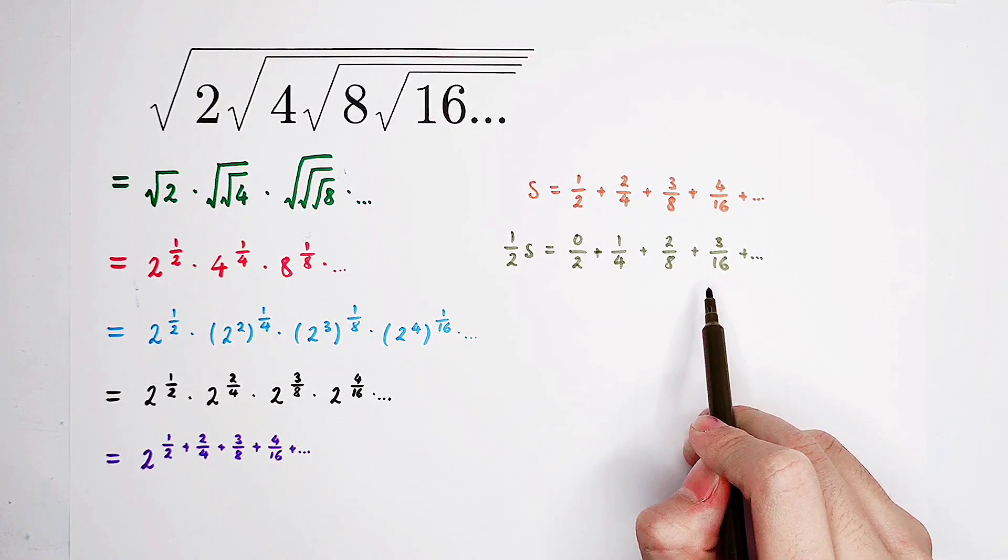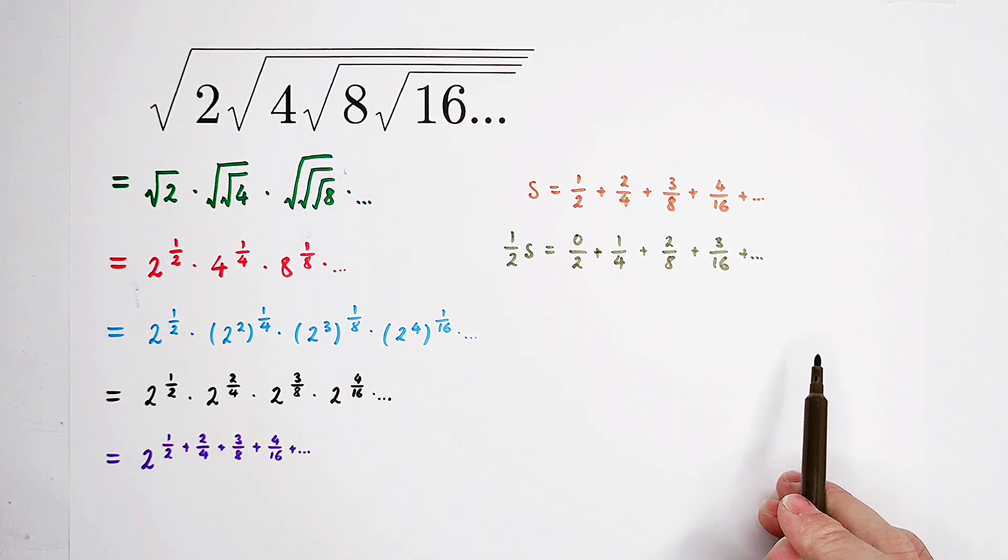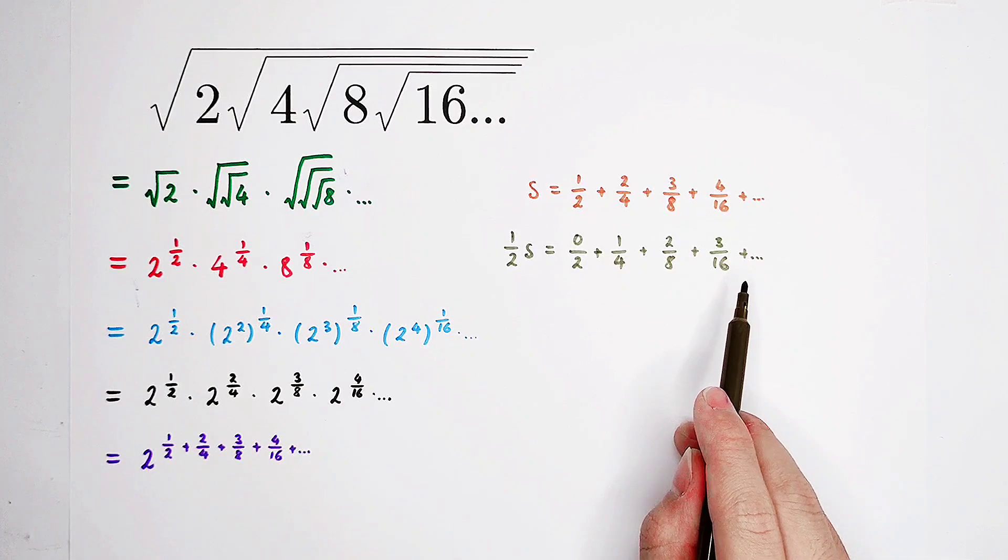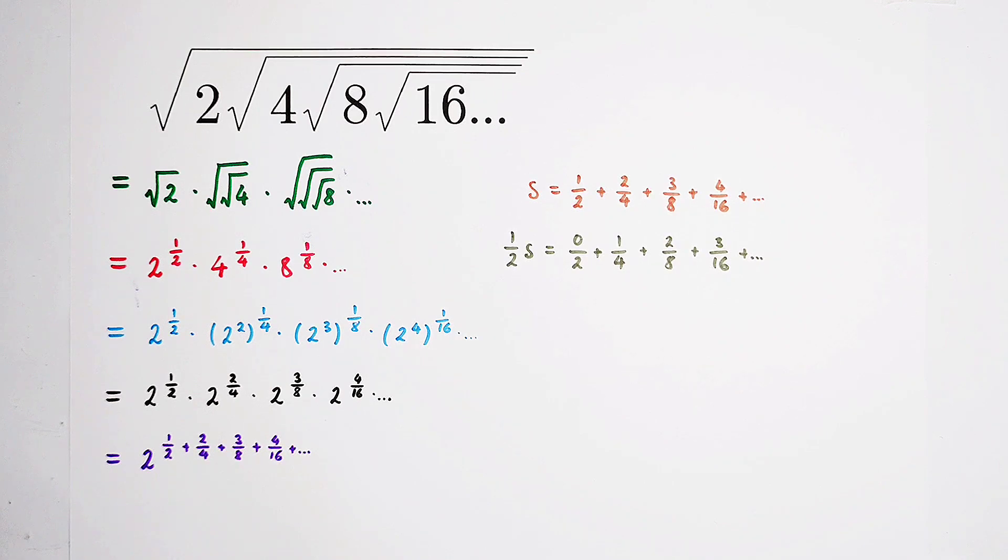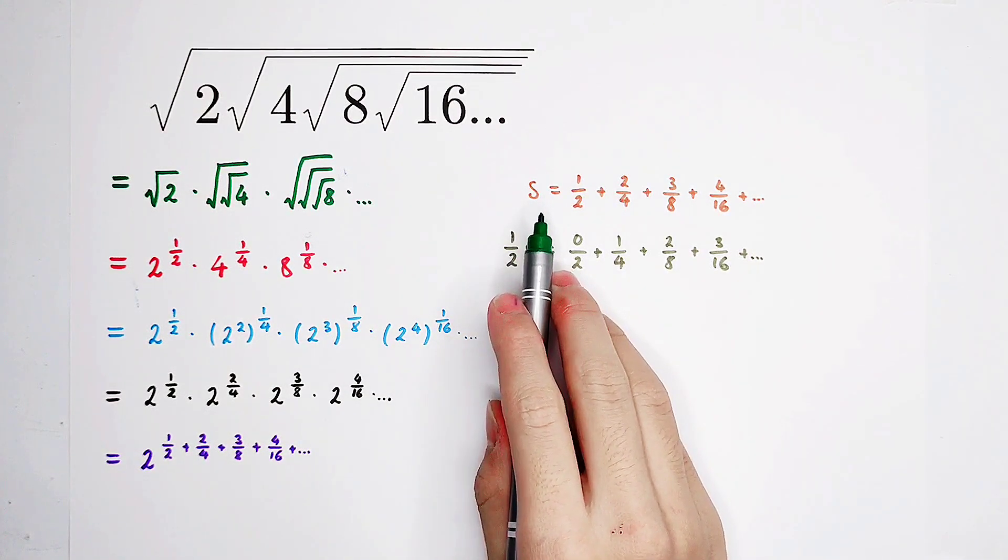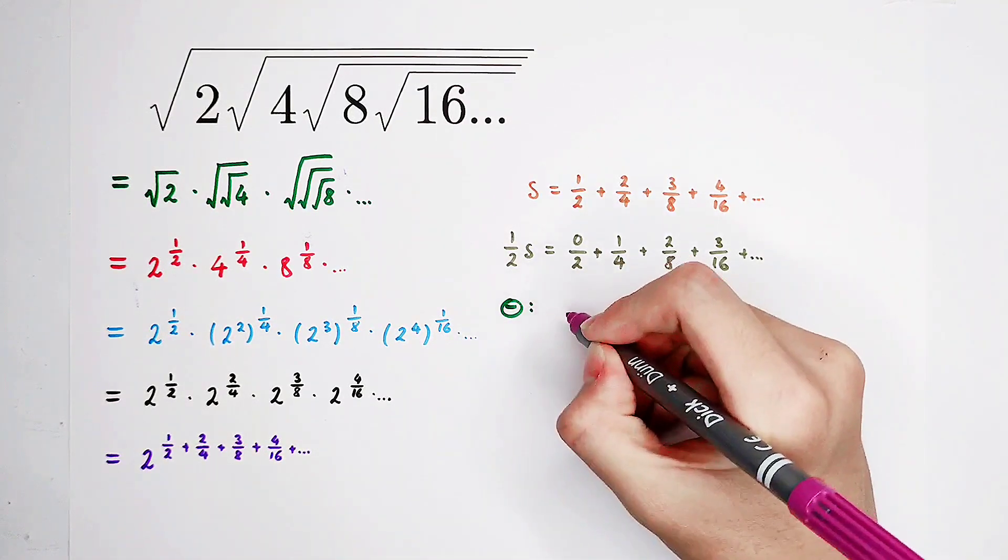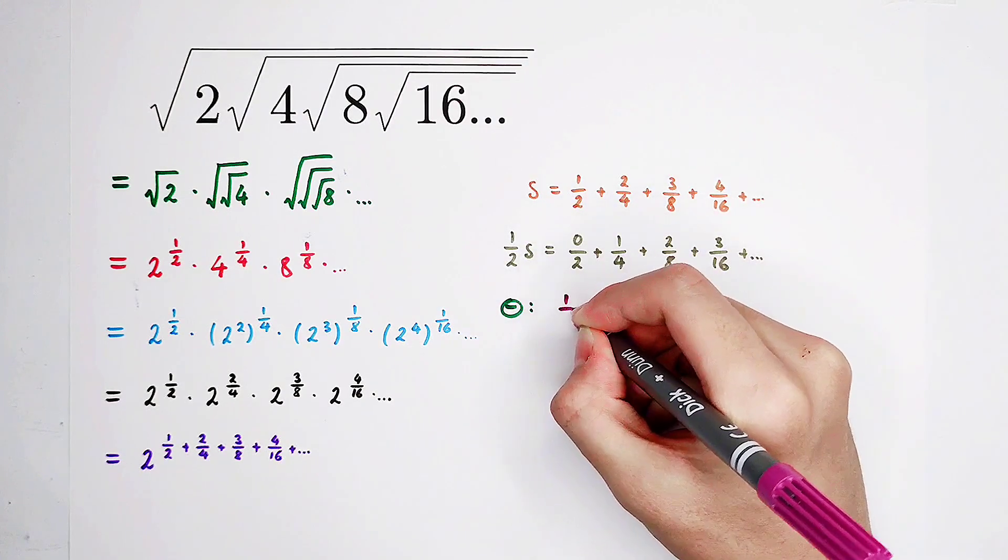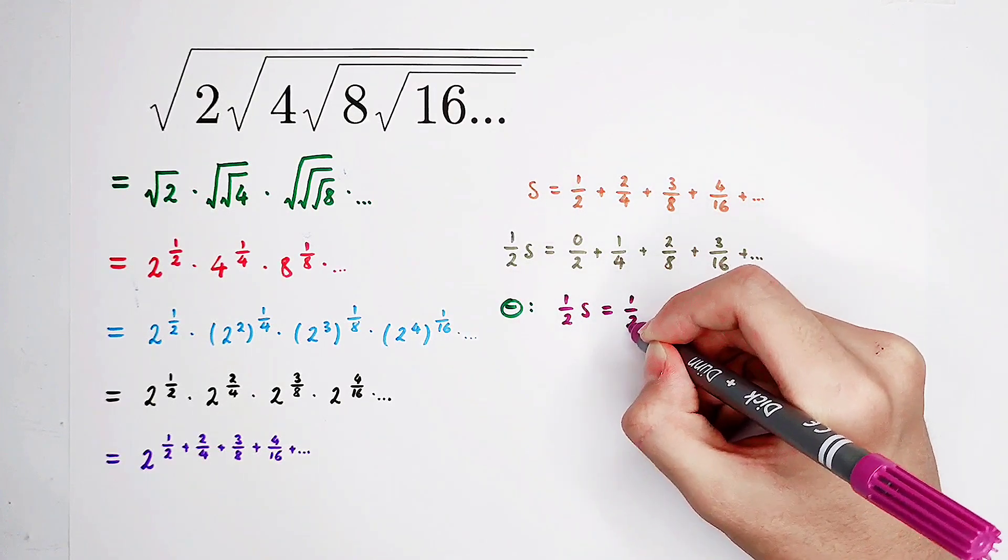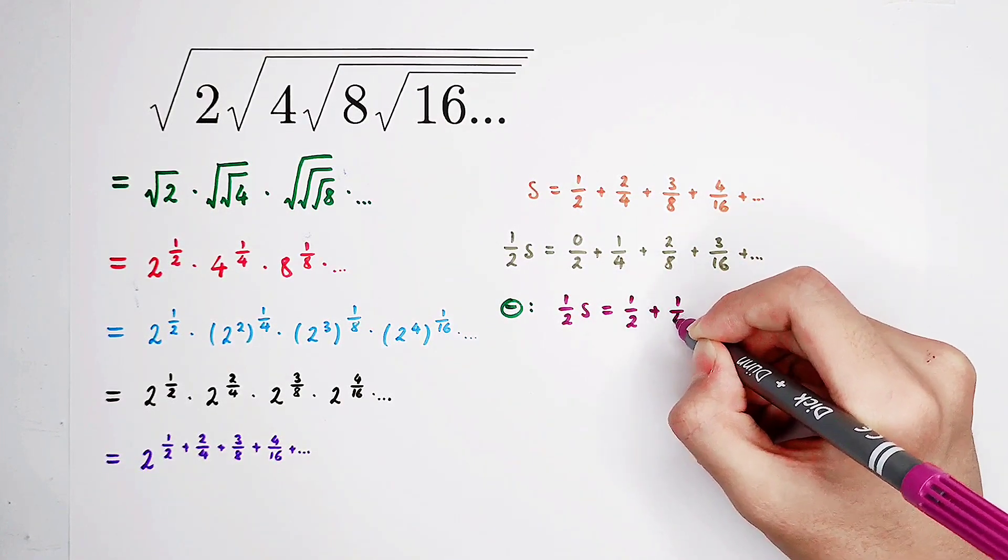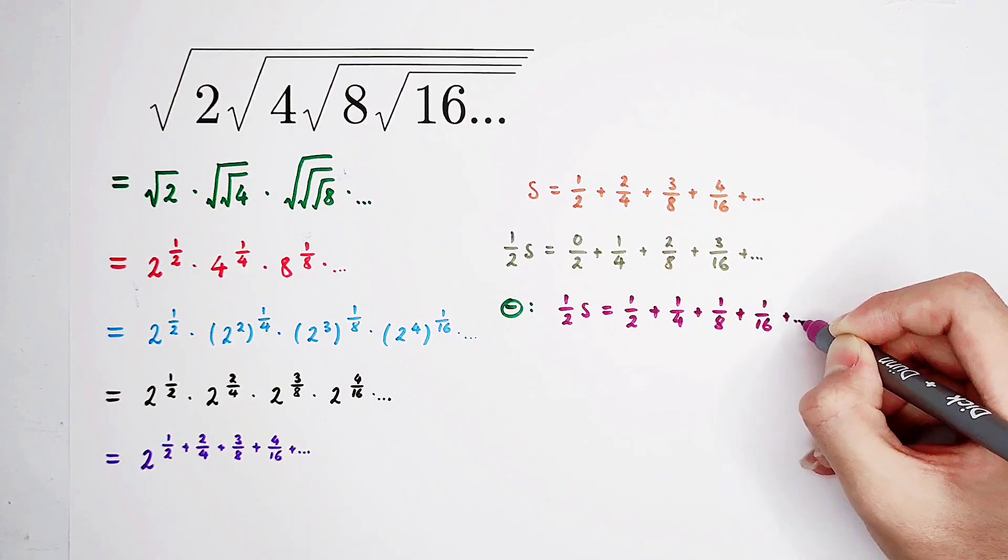The denominators are still 2, 4, 8, 16, and so on. However, the numerators, the first number of the sequence is now 0, not 1. So now, subtract the second one from the first equation. The subtraction would be, s minus a half s is 1 over 2 times s. On the right hand side, 1 over 2, plus 1 over 4, plus 1 over 8, plus 1 over 16, plus and so on.